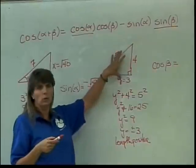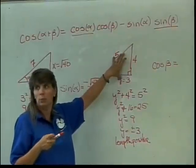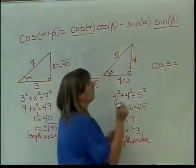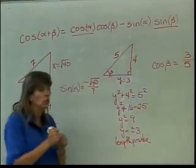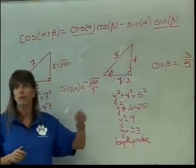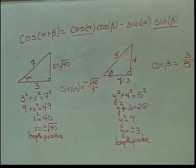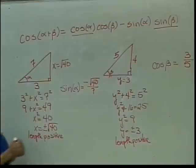what does the triangle give me? What numbers does the triangle give me to put in there? 3 over 5. But, I have to determine whether this should still be positive or negative based on beta is in quadrant 2. Cosine in quadrant 2 is negative. So this will need to be negative.